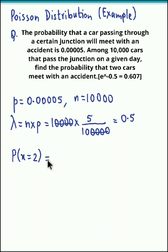Now we know the formula for the probability function of a Poisson distribution which is e raised to minus lambda times lambda raised to x divided by x factorial. Remember x is the number of cars that meet with an accident and we have to find probability that exactly 2 cars meet with an accident, so x equals 2.